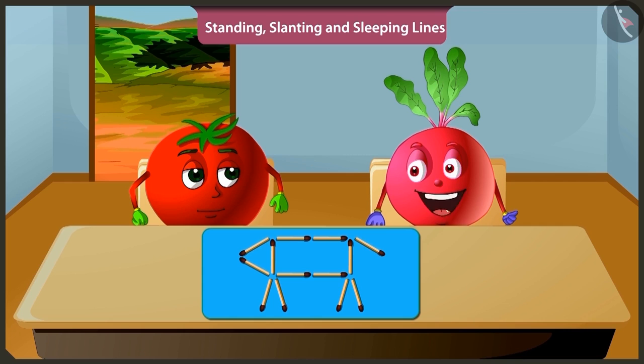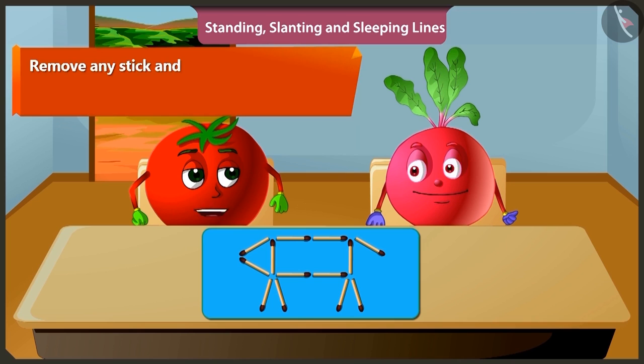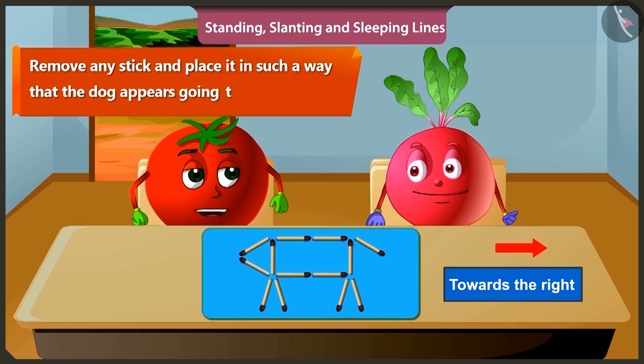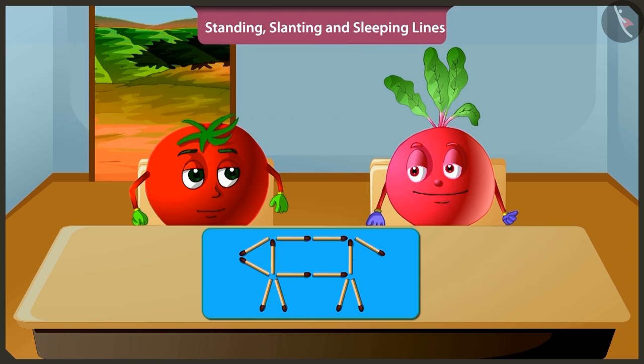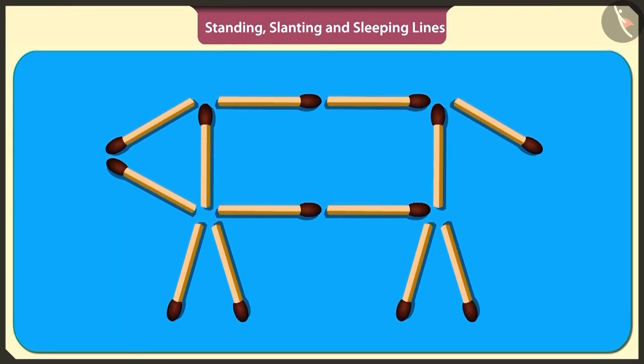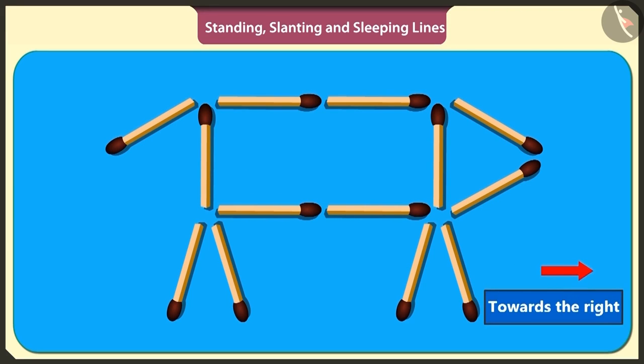But where is the game? Wait, I'll tell you. Which direction do you think the dog is going? It is going towards the left. Now you have to remove any stick and place it in such a way that the dog appears going towards the right. Oh, so this is the puzzle. By lifting the matchstick under the mouth of the dog and placing it in a slanting position near its tail will show the dog going towards the right.